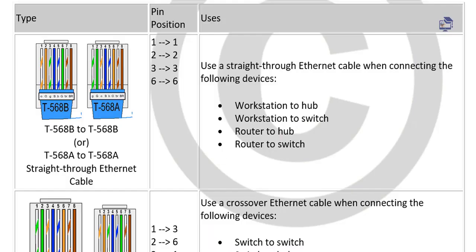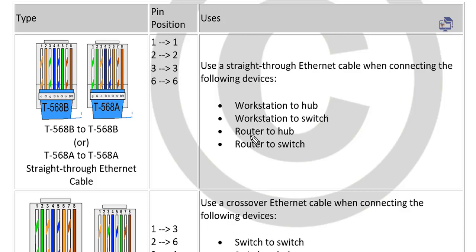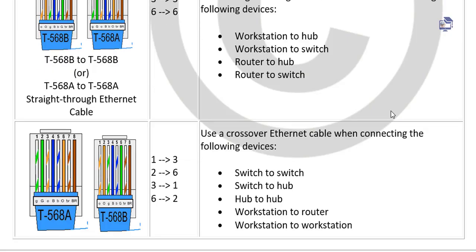We use the straight-through cable for the following connections: workstation to hub, workstation to switch, router to hub, and router to switch. These all use the straight-through cable because they involve different types of devices.